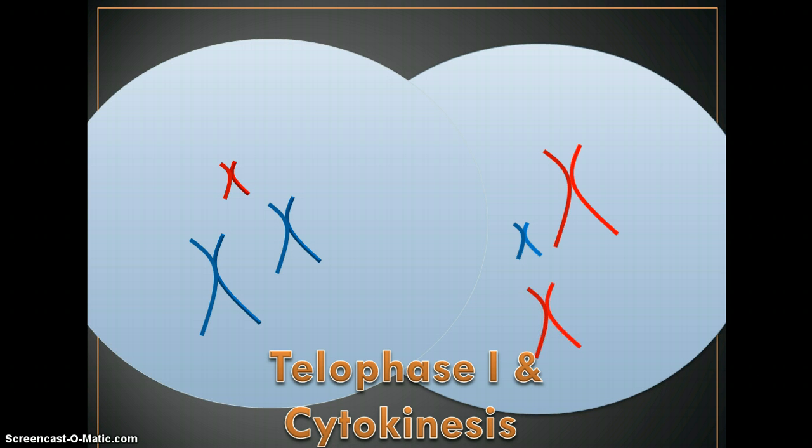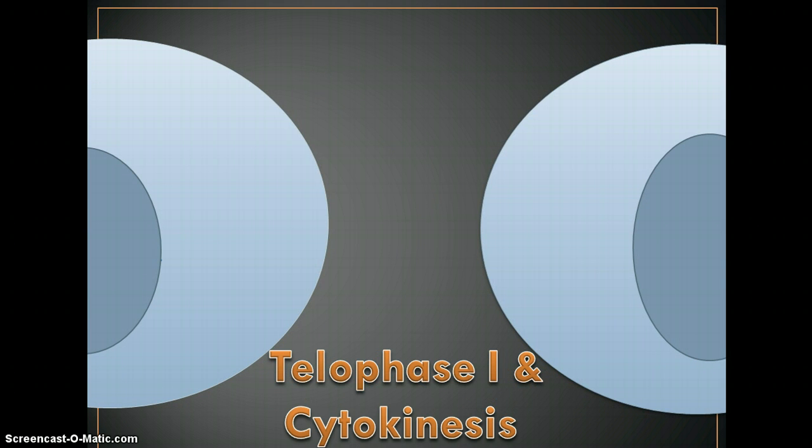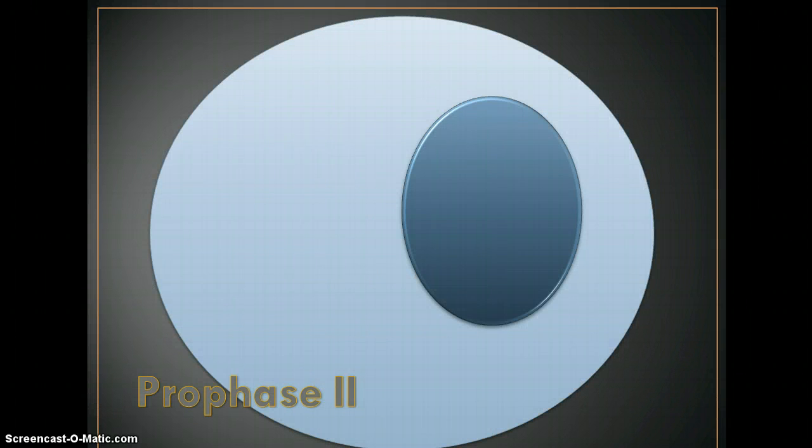In telophase one, the nucleus reforms and the chromosomes decondense. So now notice we have two cells and again they are both haploid. And both of these cells will go through the next part of meiosis, but we're only going to follow one of these cells through the process. So prophase two, actually this whole process, meiosis two, is exactly like mitosis. And you will hopefully be able to recognize the similarities as we go through this.